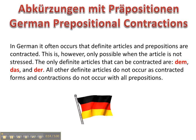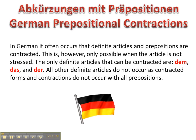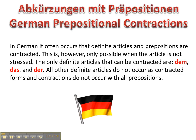Contractions in German occur when definite articles and prepositions are combined. This is only possible when the article is not stressed, and the only definite articles that can be contracted with prepositions are dem, das, and der. All other definite articles do not occur as contracted forms, and contractions do not occur with all prepositions.